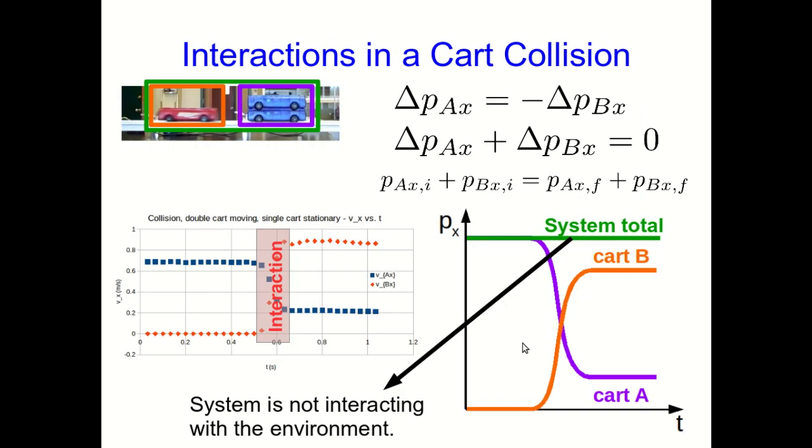At the very end of last lecture we saw that because the carts interact with each other they cause each other's momentums to change. But on the other hand, because the two-cart system has only weak interactions with the track, the momentum of the total system remains the same through the collision.